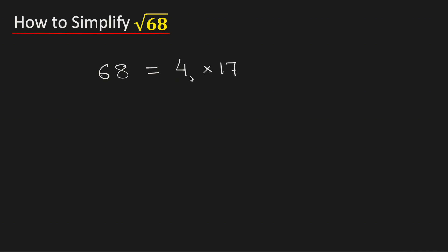We have written this way because 4 is a perfect square, which is a square of 2, and 17 is a non-perfect square. Now we will take square root on both sides.